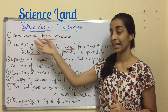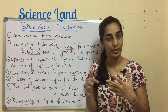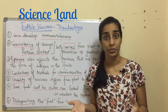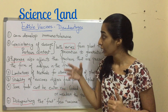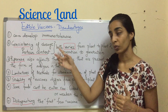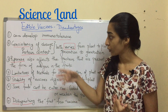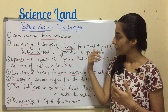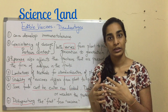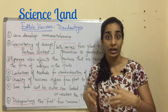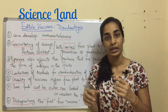Now let's talk about the disadvantages of edible vaccines. The first one is that an individual can develop immunotolerance against a peptide or protein, which is a disadvantage. Second, the consistency of dosage varies from plant to plant and generation to generation, and the protein content also varies, which cannot be controlled since plants are the biomanufacturers.